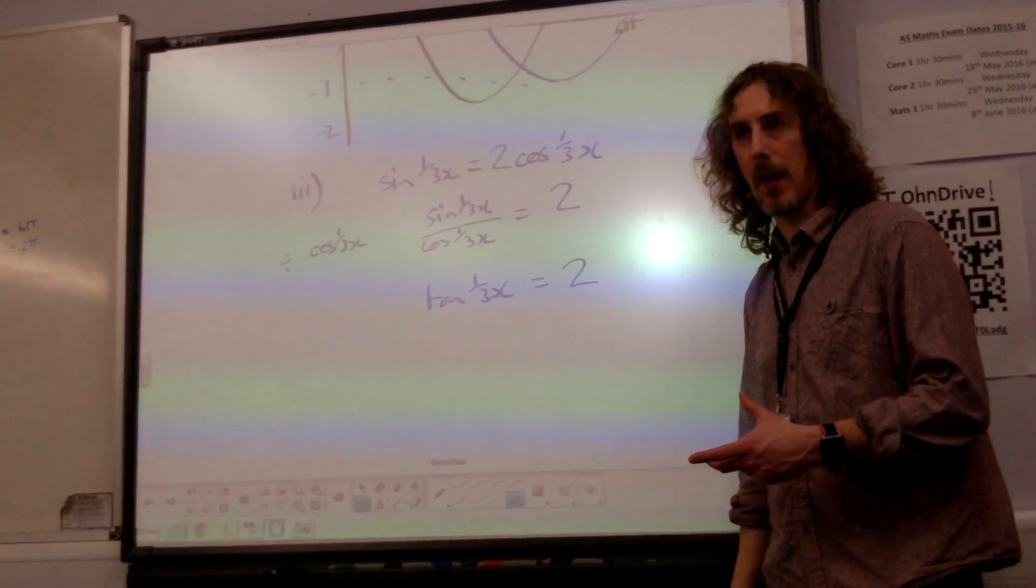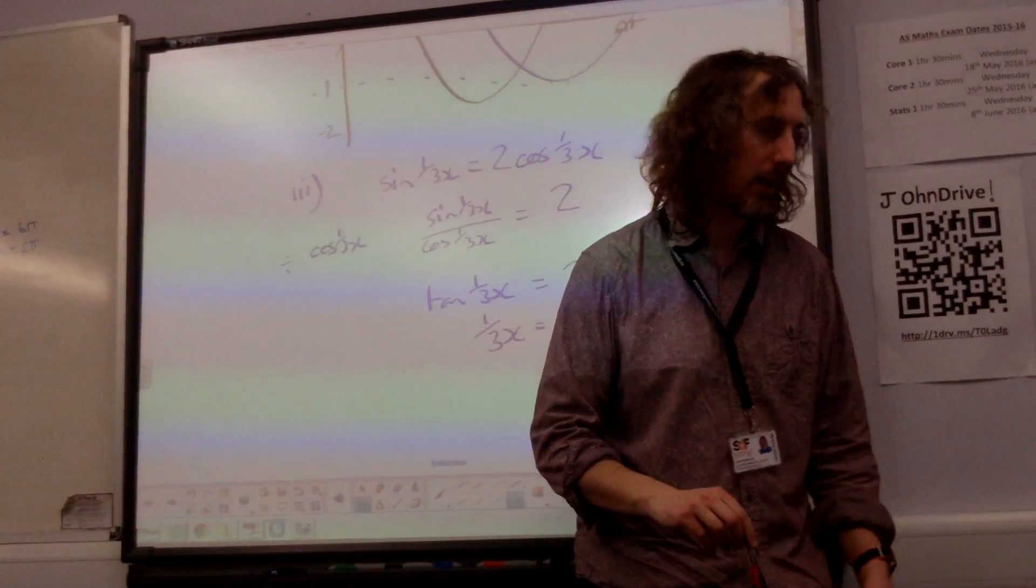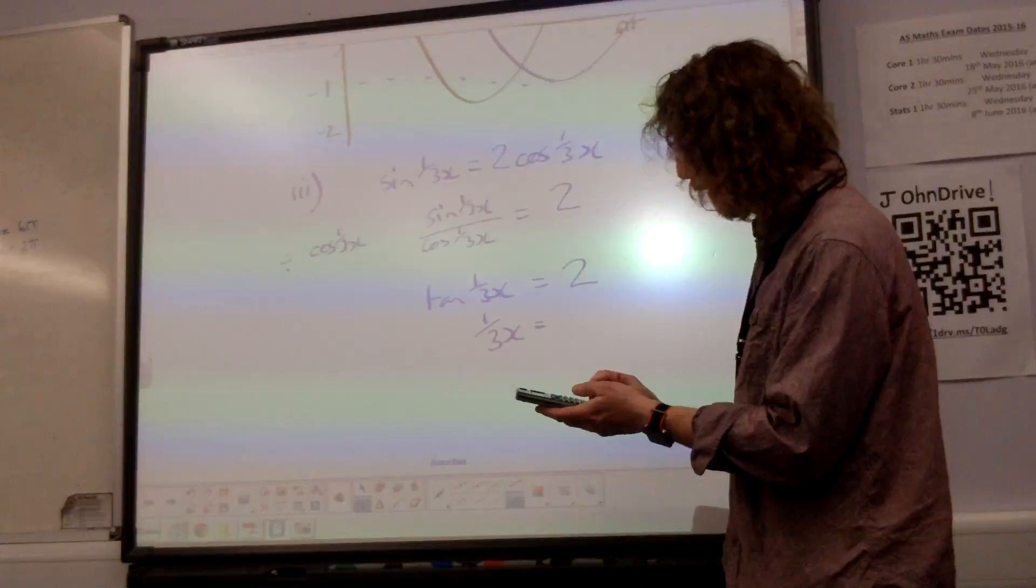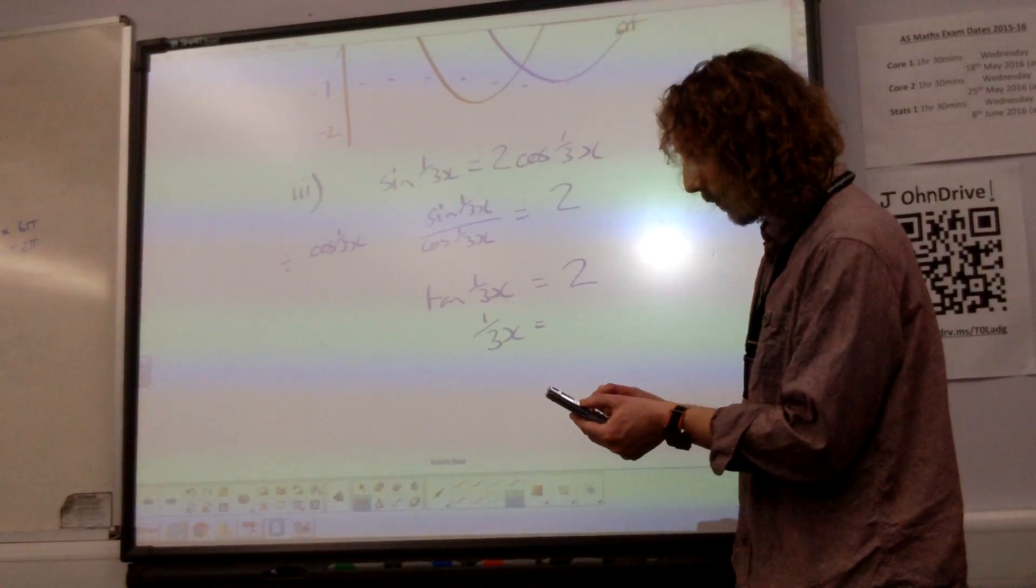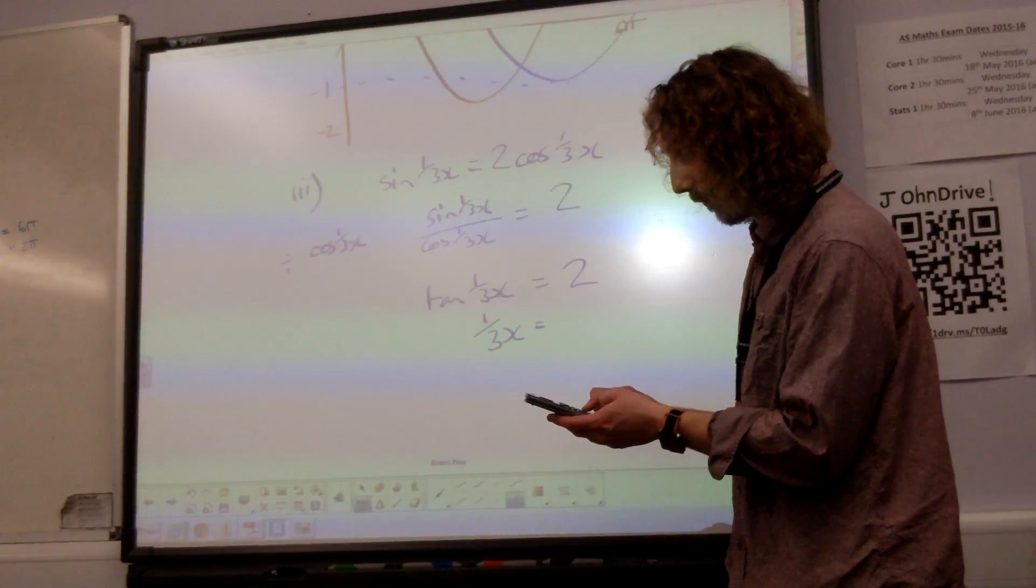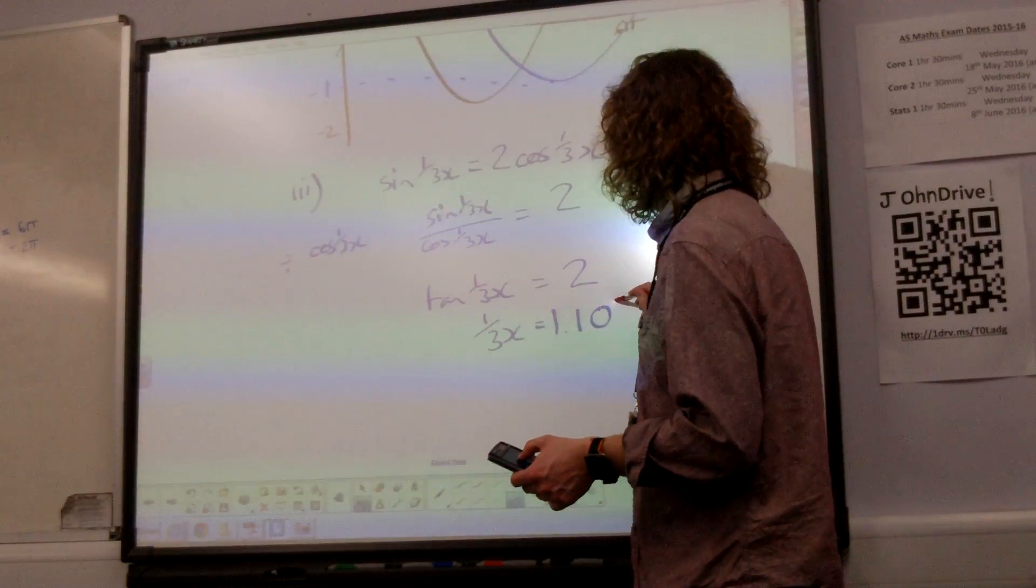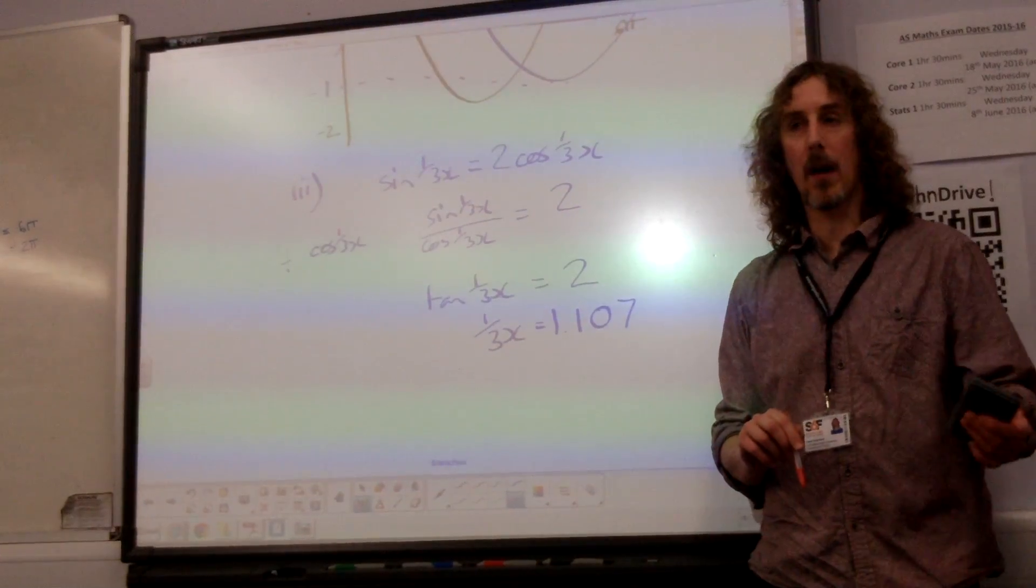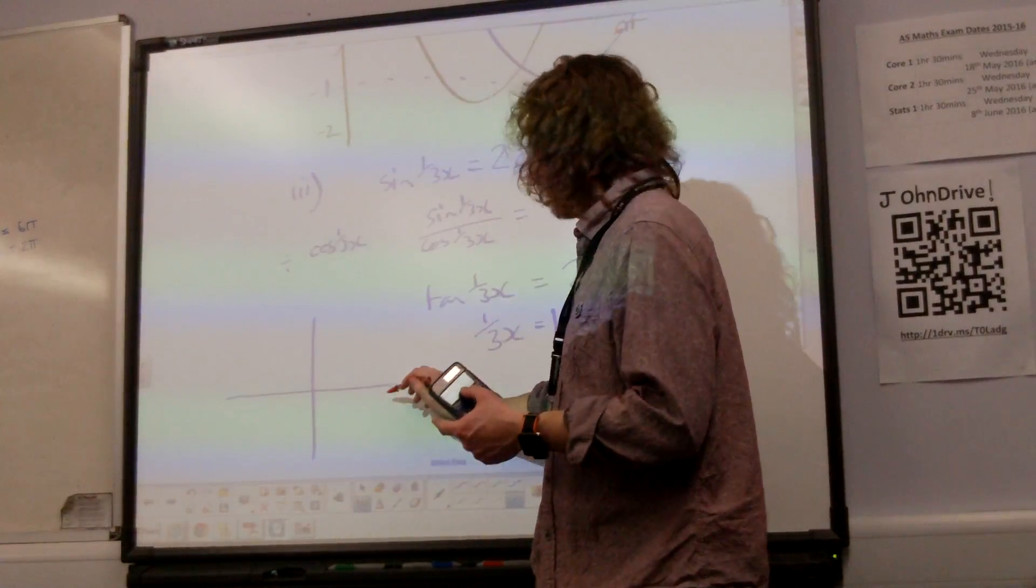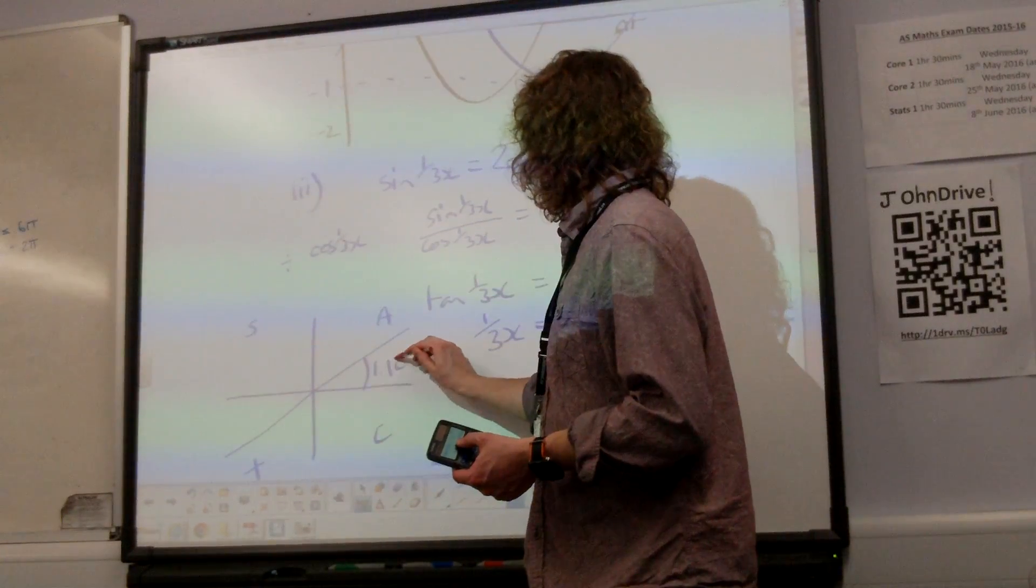So now we're going to try and solve that. We're going to do inverse tan of 2. So we're going to do third x is inverse tan of 2. Oh, but it's in degrees at the moment. So inverse tan of 2 gives us 1.107. OK, so we're going to put that on our cast diagram. We'll deal with the symmetry in this, because we already know a little bit about the symmetry. It was tan, it was positive there. It's 1.107.